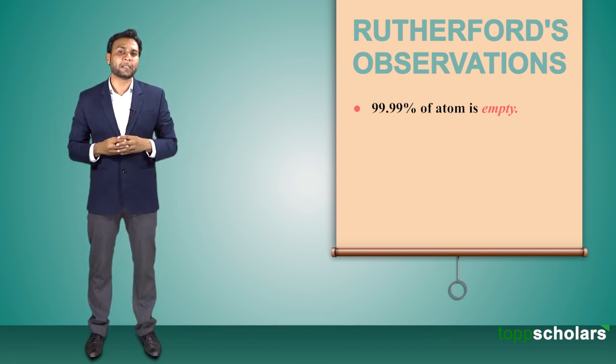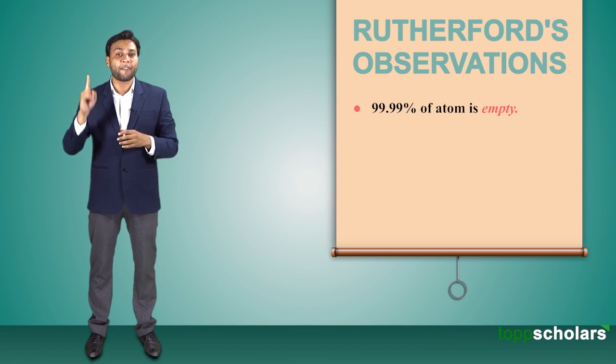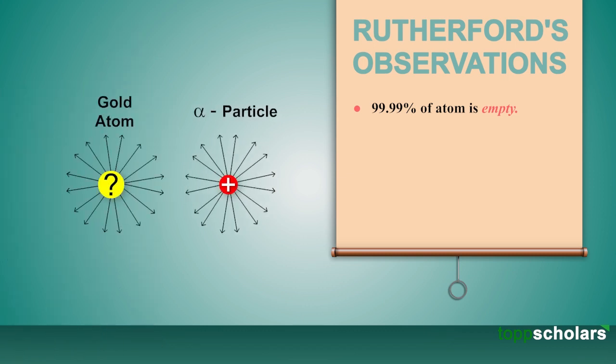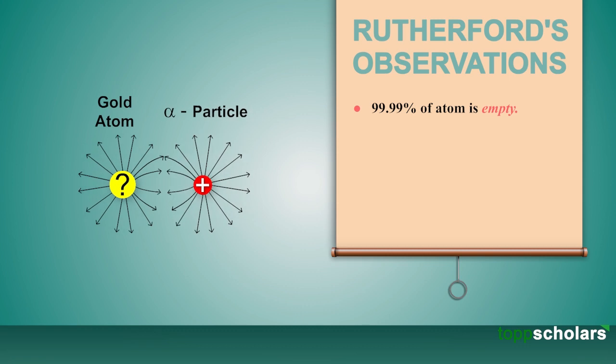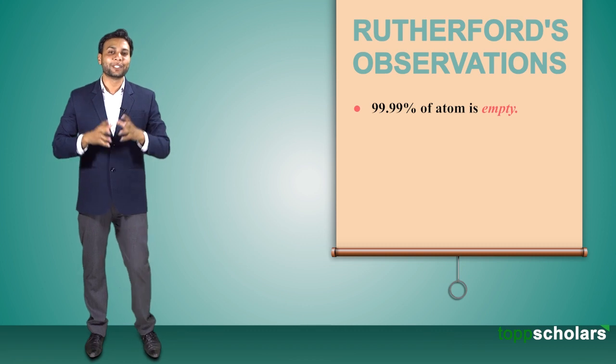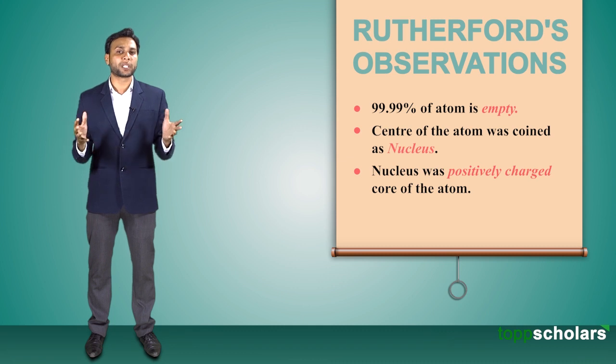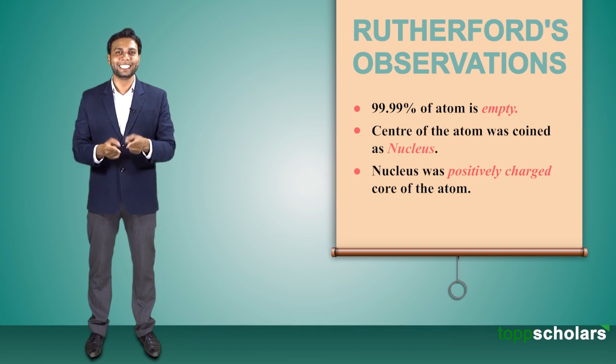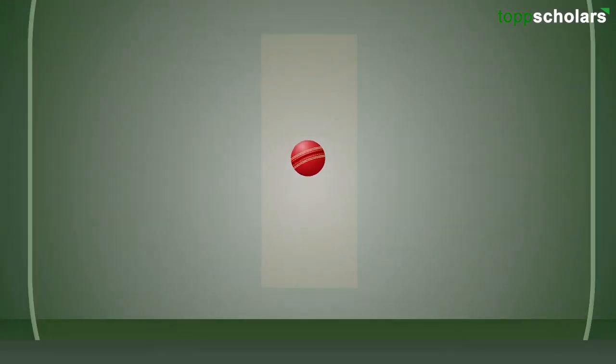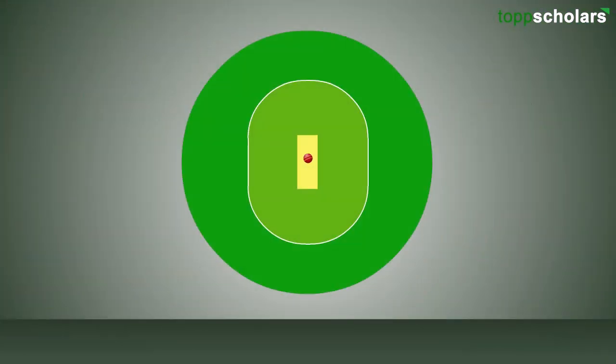He said that 99% of particles passing through the foil indicated that the atom had plenty of empty space. He proposed that something in the atom caused deflection of 1% of particles. This deflection occurred as the alpha particle, being positively charged, was repelled by something having a similar charge. He termed this core as the nucleus. The nucleus contained all the positive charge and was situated at the center of the atom.